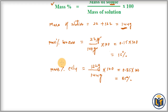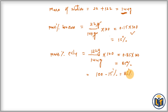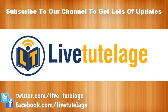A simplified way to calculate the mass percentage of solvent, when the mass percentage of solute is known, is to simply subtract: 100% − 15% = 85%. This works because mass percentage of solute plus mass percentage of solvent equals 100%.